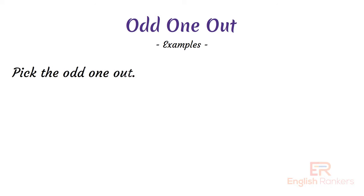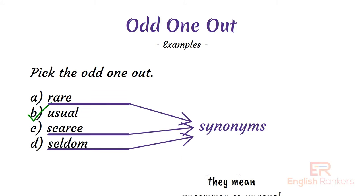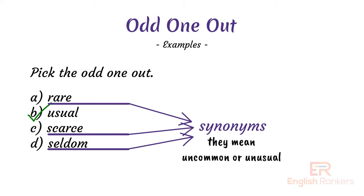Pick the odd one out: A) rare, B) usual, C) scarce, D) seldom. The answer is B) usual. Rare, scarce, and seldom are synonyms of each other, meaning uncommon or unusual, so 'usual' is the odd one out and option B is the correct answer.